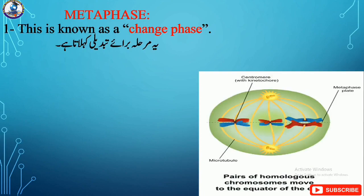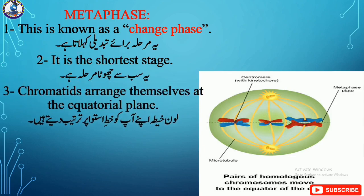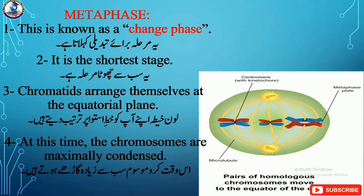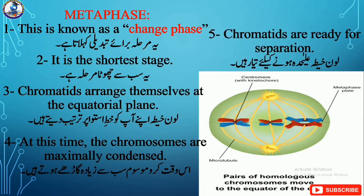Moving towards metaphase — this is known as the change phase. It is the shortest stage of mitosis. In this stage, chromatids arrange themselves at the equatorial plane. At this time, chromosomes are maximally condensed and chromatids are just ready for separation.